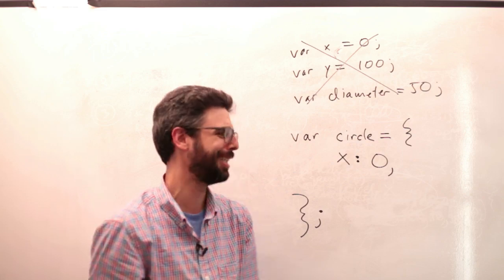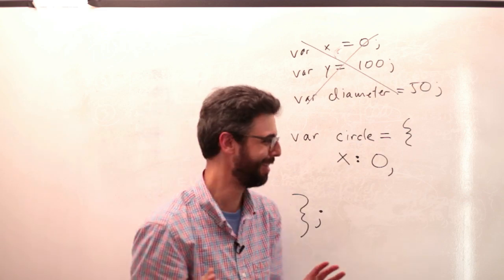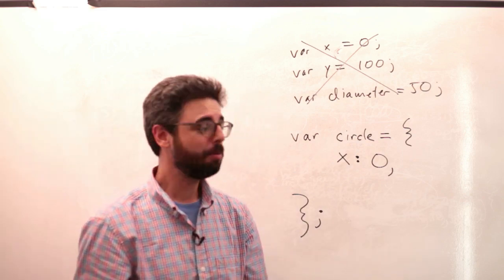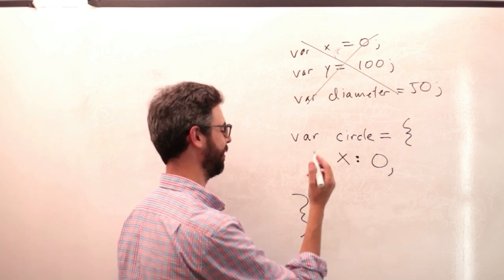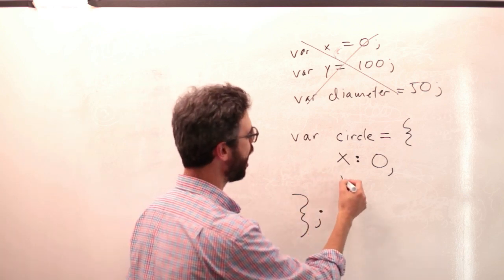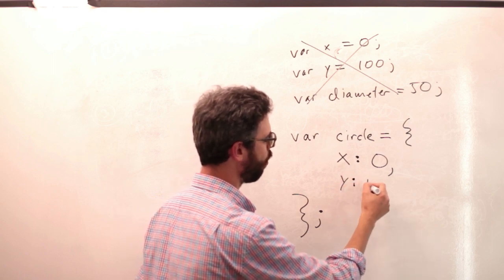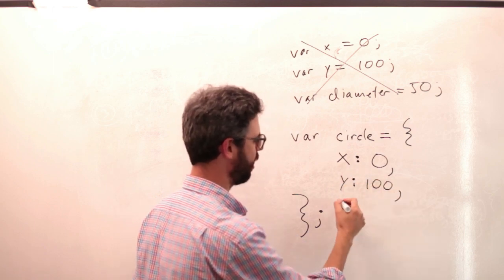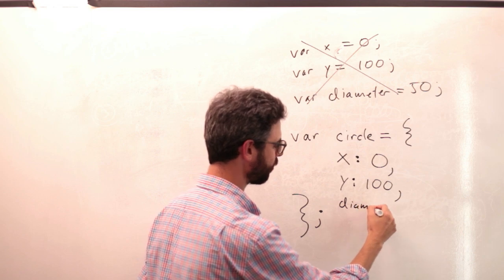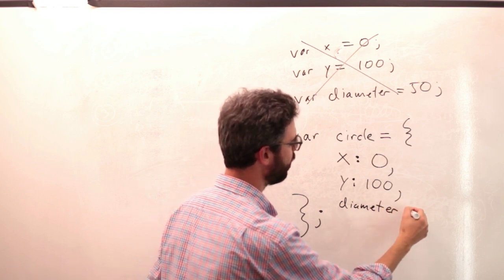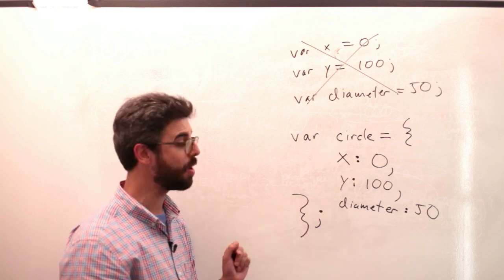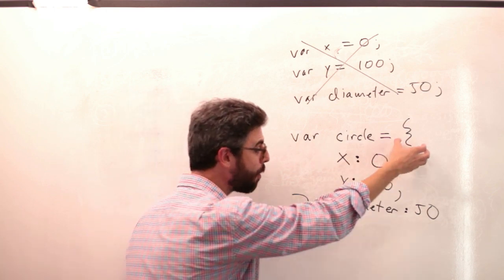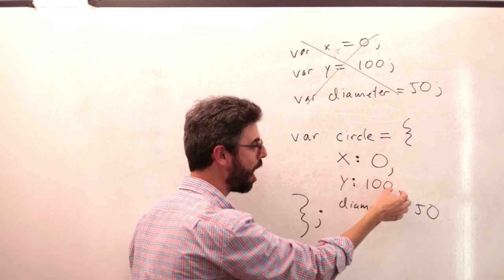I really hope I'm getting the syntax of this right because this is new for me. And if I get it wrong, I can always make it again. And I'm sure somebody on the internet will tell me if anybody actually watches this. Y colon 100 comma diameter colon 50. Now, where the line breaks are don't actually matter. The curly brackets matter, the colons matter, and the commas matter.